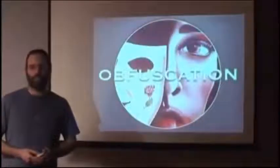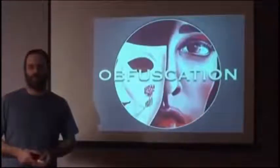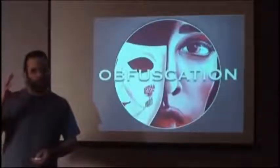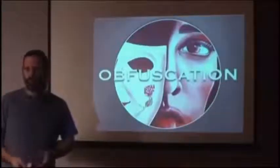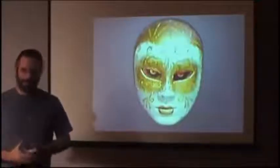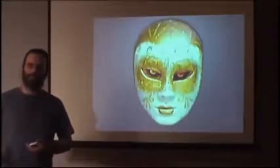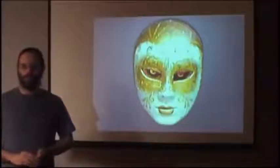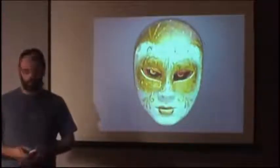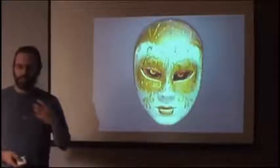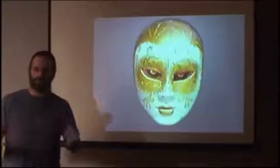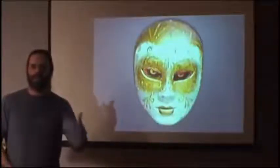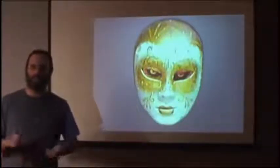I'll begin with obfuscation. This is the first method of manipulation that the mind control sorcerers use against the human population. Obfuscation looks like this — you see an elaborate ornate mask. If you saw that coming at you, you might not be so worried about it. It seems like an ornamental style. This is how something has to be packaged to us: it has to look ornate, it has to look pretty, it has to be packaged and presented in a nice way.